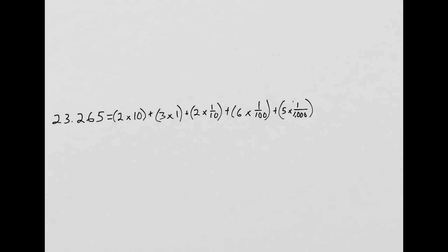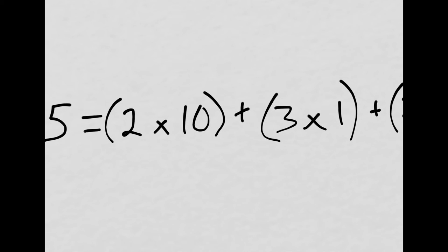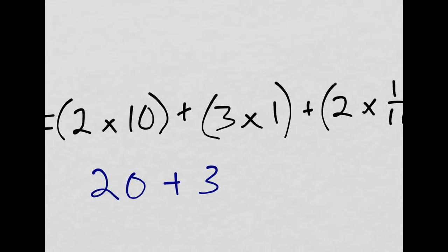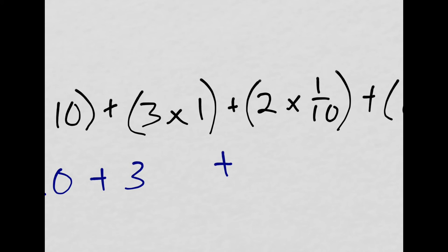And the same thing in reverse. Let's see how this number gets put back together into standard form. Let's take a look at one section at a time. We're going to zoom in here on 2 times 10—that's 20. Plus 3 times 1, that's 3. Plus 2 times 1 tenth, that's 0.2.